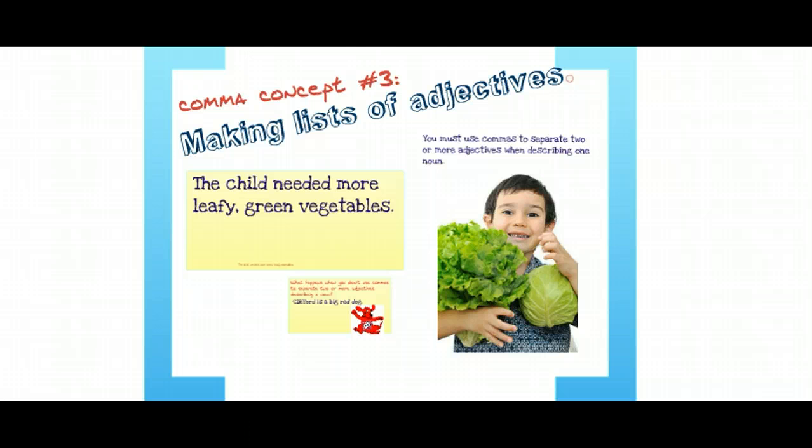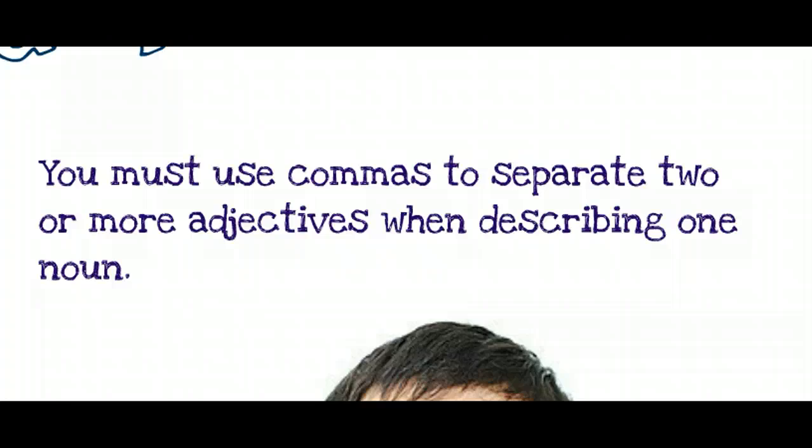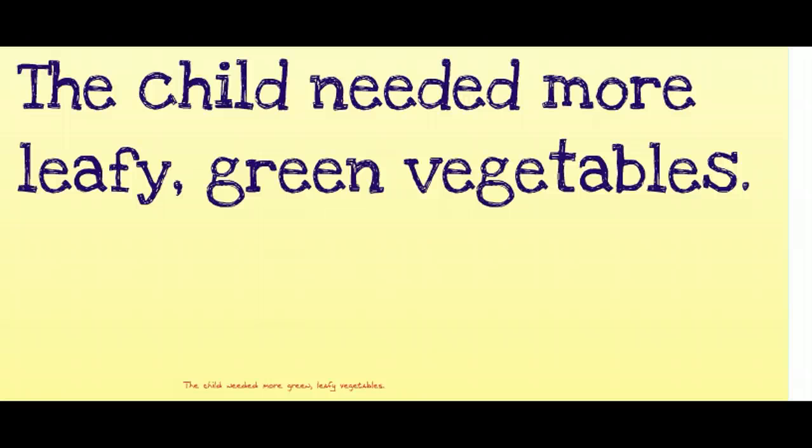In this rule, you must use commas to separate two or more adjectives that describe one noun. This is two or more for adjectives. For example: 'The child needed more leafy, green vegetables.' Leafy and green are both adjectives that describe vegetables.